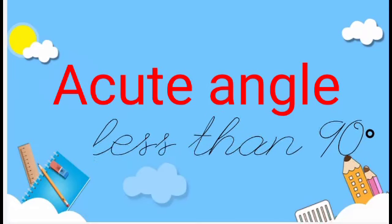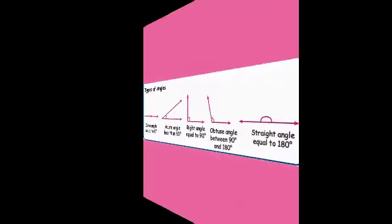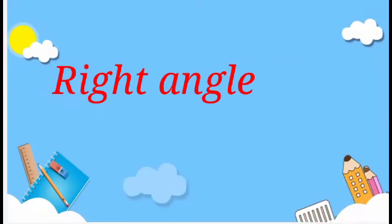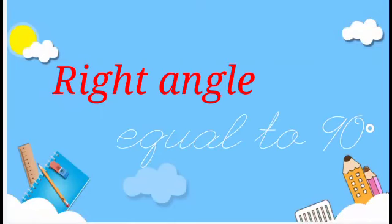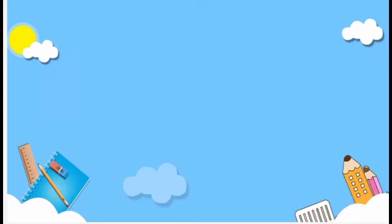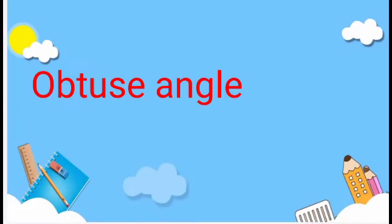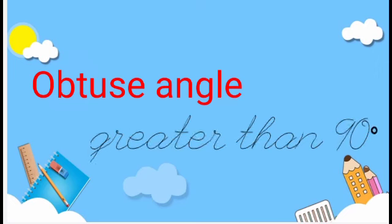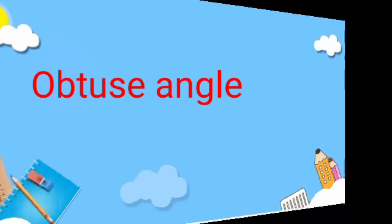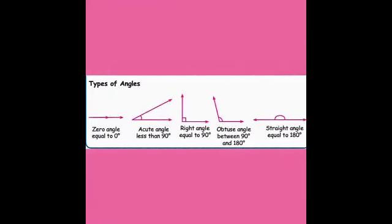A right angle is an angle which is equal to exactly 90 degrees. An obtuse angle is an angle measured above 90 degrees. The last type is a straight angle, which is equal to 180 degrees — any angle whose measure equals 180 degrees is called a straight angle.